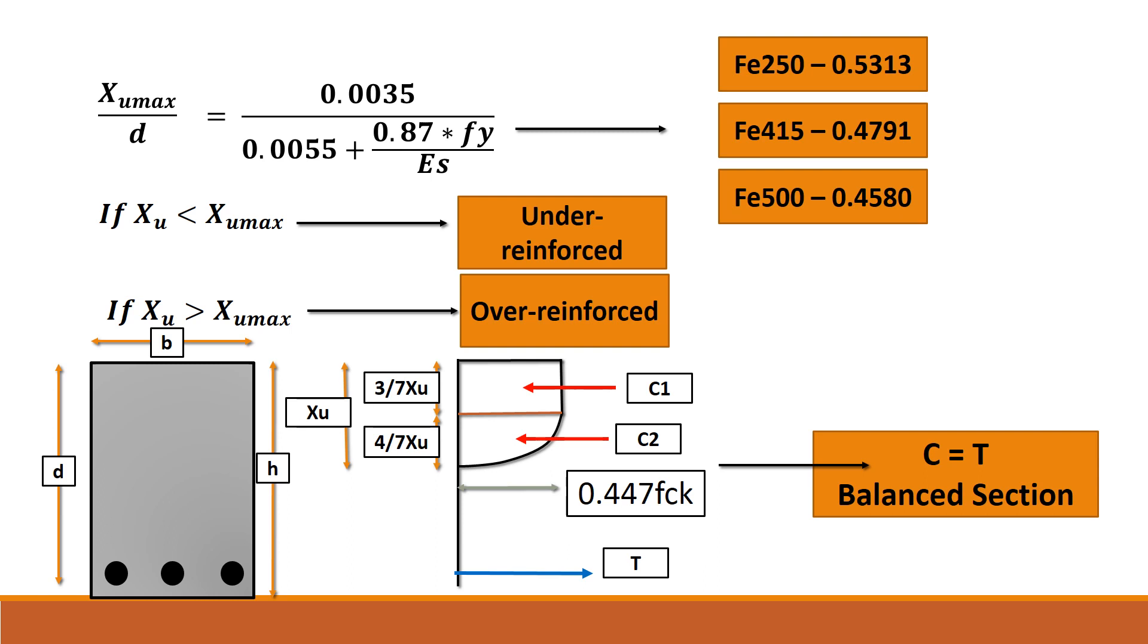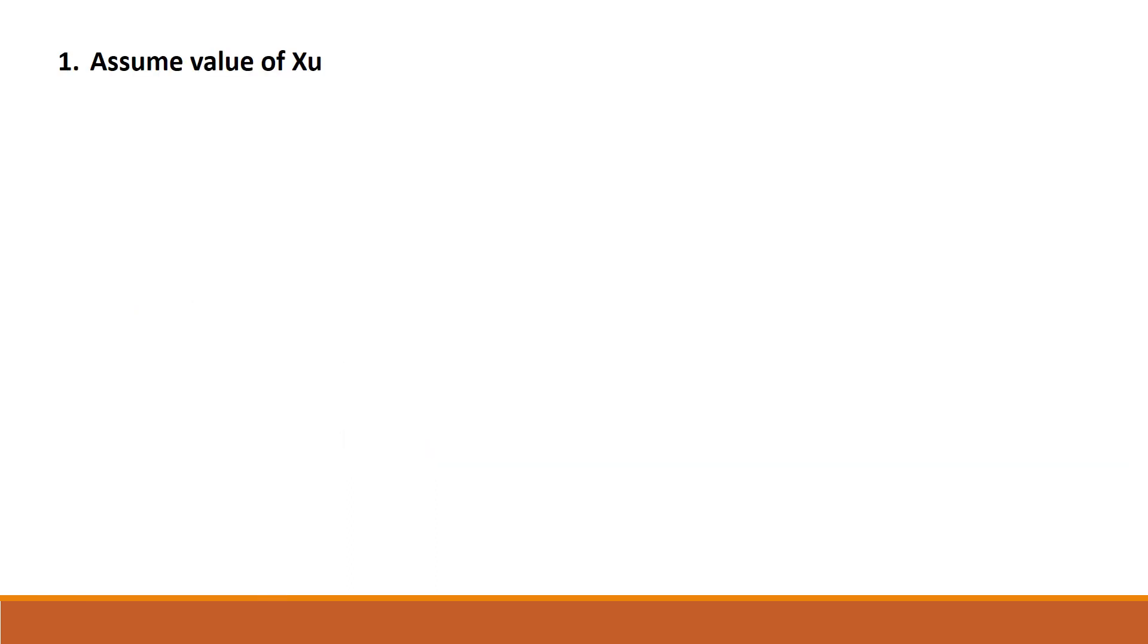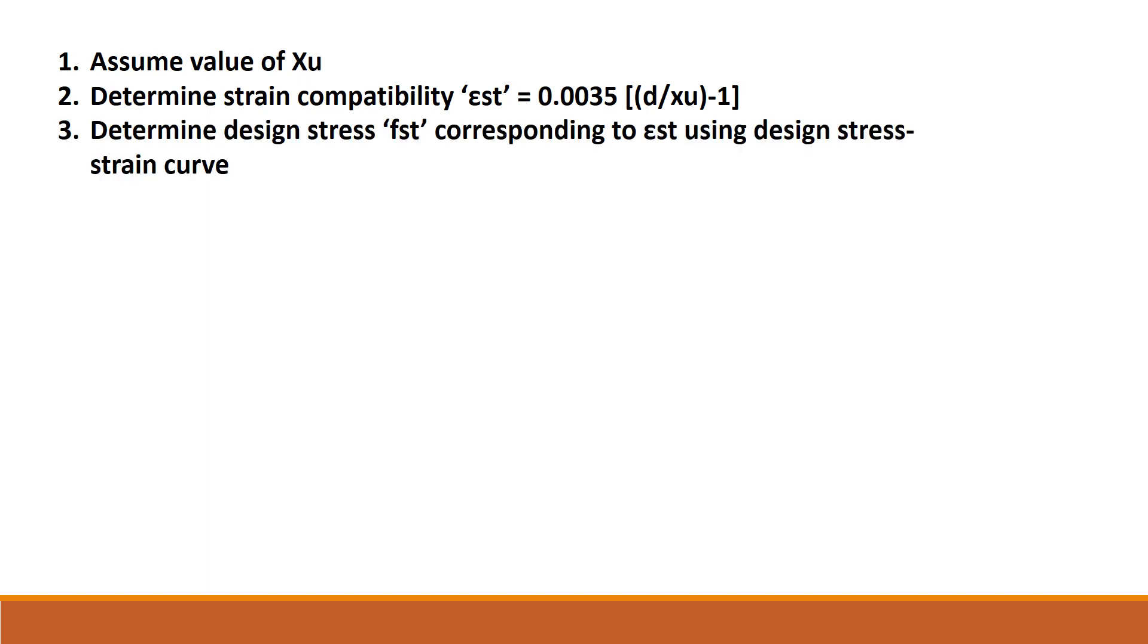So the process of determination or analyzing of the beam is first to determine the value of XU. Then from the strain compatibility, we determine the value of EST, which is equal to 0.0035 D by XU-1. Third, we determine the design stress FST corresponding to EST using design stress-strain curves.